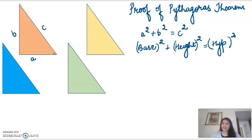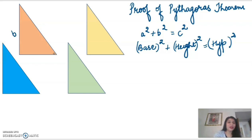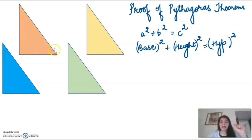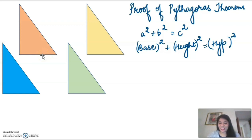So now we are going to discuss the proof of this Pythagoras theorem. Let's see which method we are going to discuss in this video. Now these are four identical right angle triangles with base equal to a centimeter, height equal to b centimeter, and hypotenuse equal to c centimeter. If I rearrange these triangles, they will form a large square.